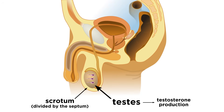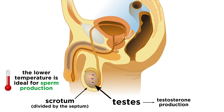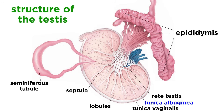It is here that sperm are produced, which may seem like a vulnerable place to store this critical asset, but the lower temperature external to the body is ideal for sperm production. Each testis is surrounded by the tunica albuginea, followed by the tunica vaginalis. Inside, the testis is divided into lobules, which contain coiled seminiferous tubules, and these are where sperm is made, from spermatogenic cells, a process called spermatogenesis.